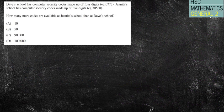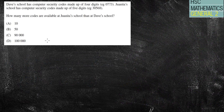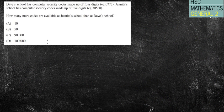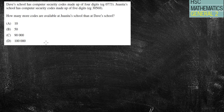Last question, I promise. Dave's school has computer security codes made up of four digits. Yuanita's, I'm sorry if your name is Yuanita and I pronounced that incorrectly, she has security codes made up of five digits. How many more codes are available at Yuanita's school than at Dave's school? Well, for Dave, Dave has four digits. Now, how many digits are there for that first position?